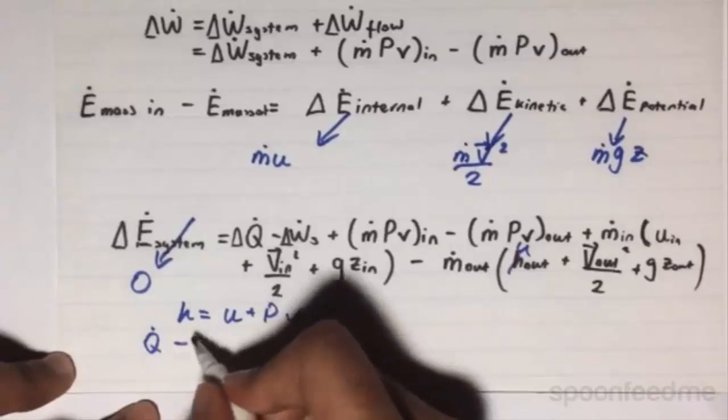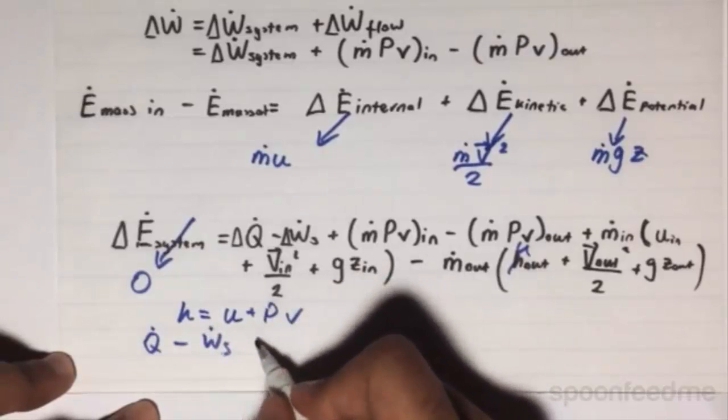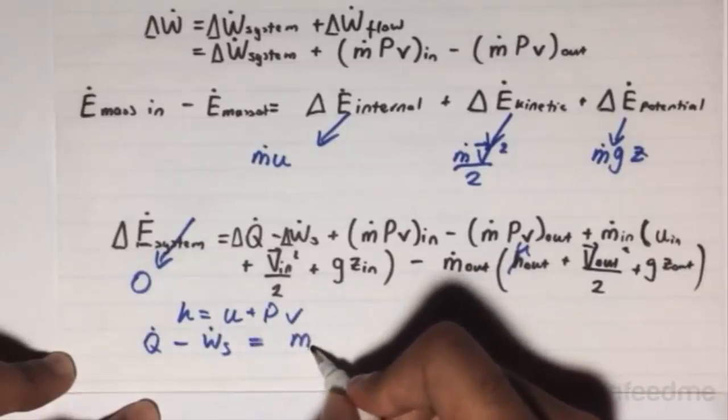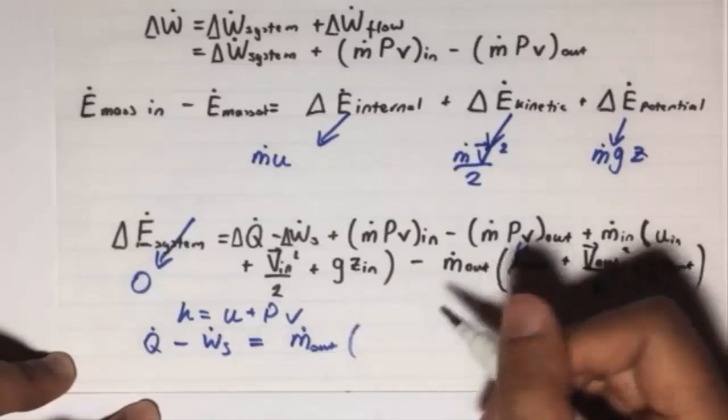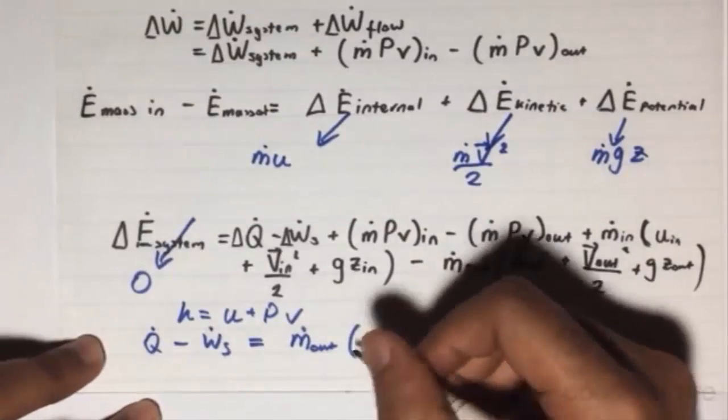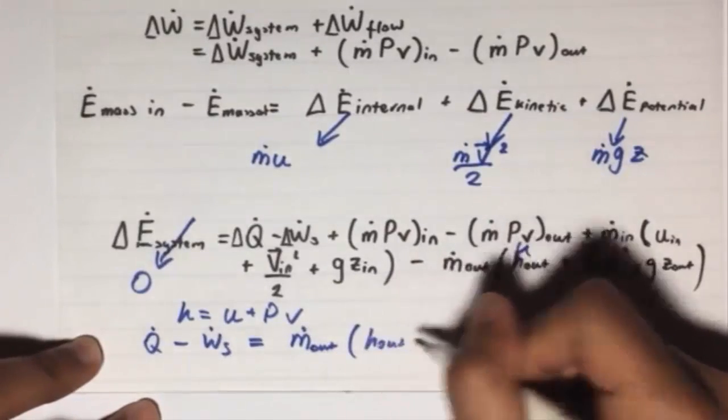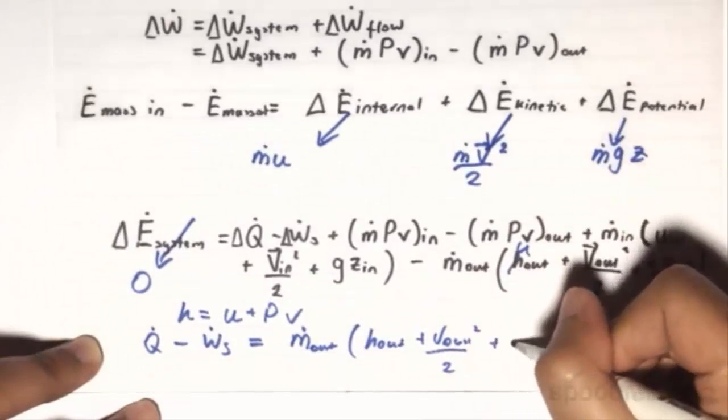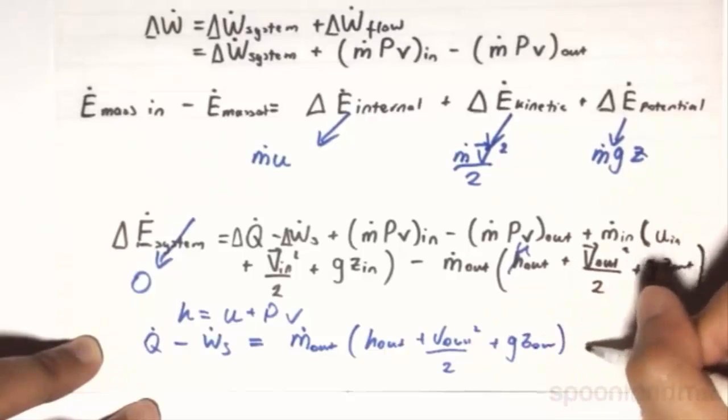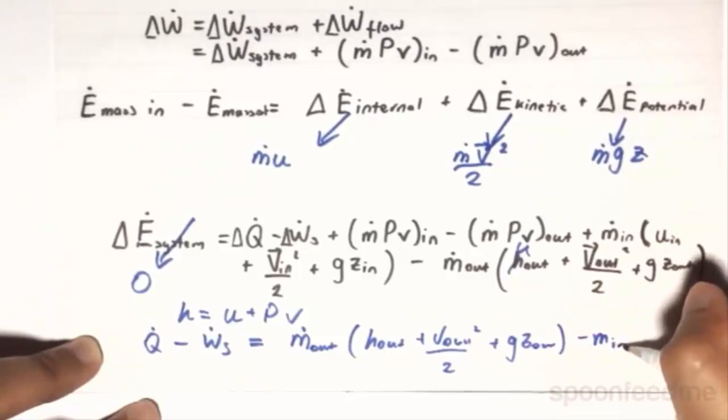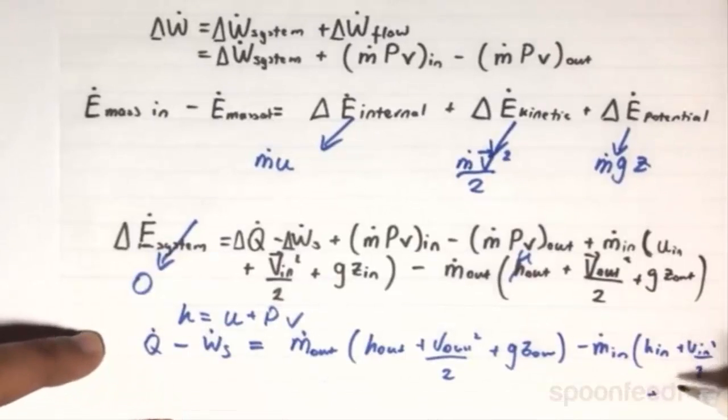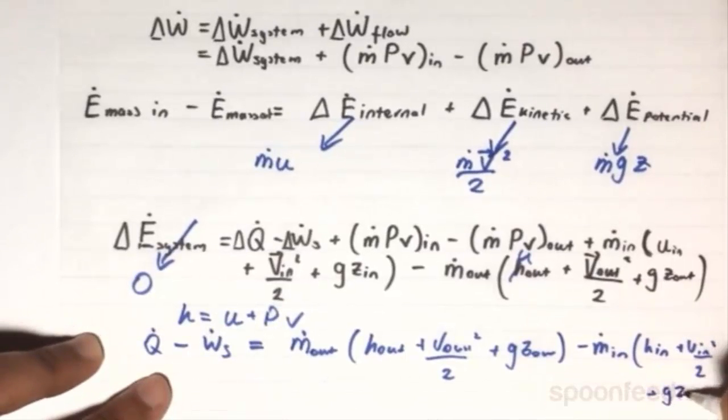Q̇ minus Ẇ_system equals ṁ_out times (h_out + v_out²/2 + gz_out) minus ṁ_in times (h_in + v_in²/2 + gz_in).